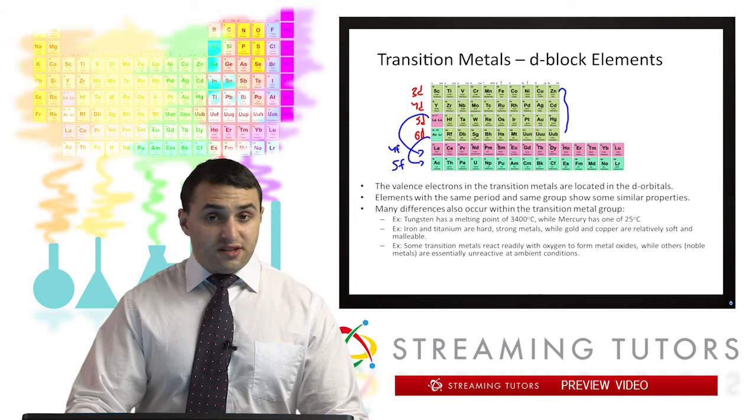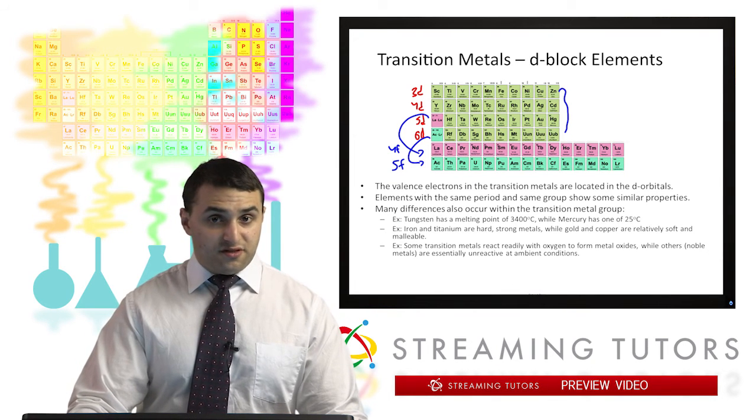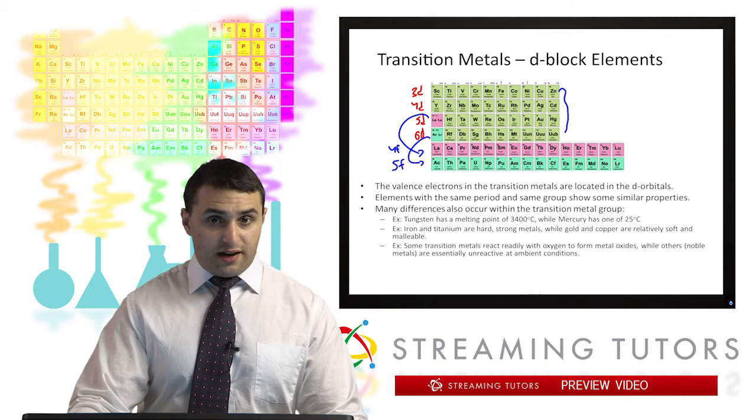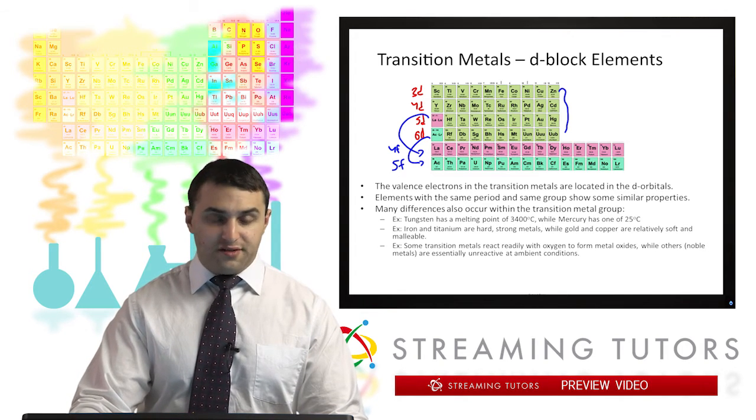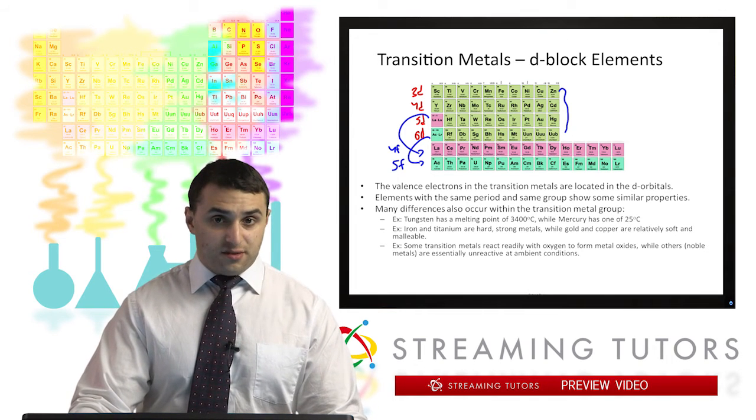The elements in the same period and same group tend to exhibit somewhat similar properties, but throughout the entirety of the transition metals themselves there's a high variation of properties.